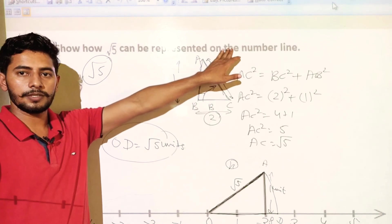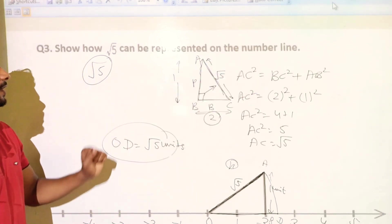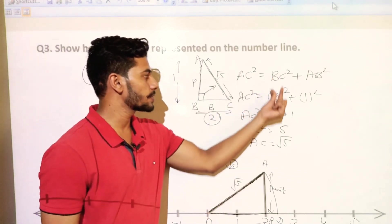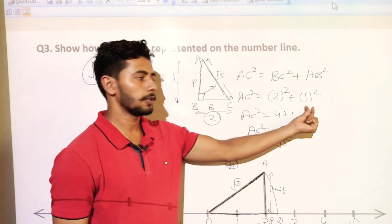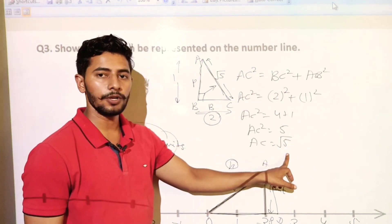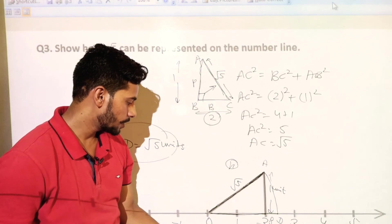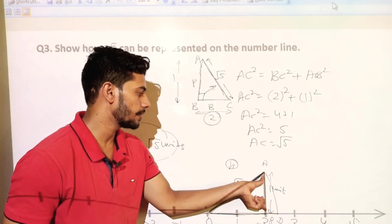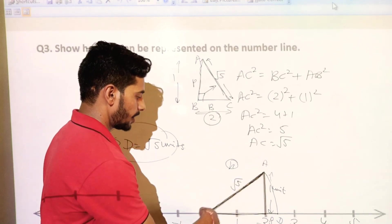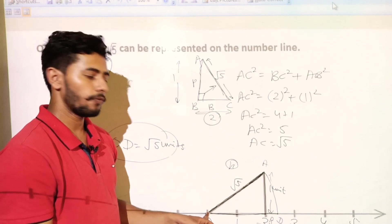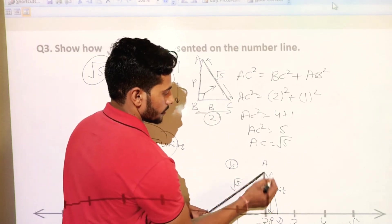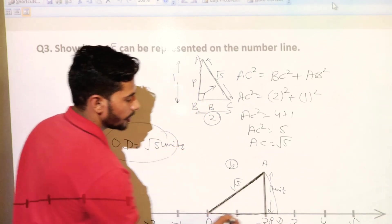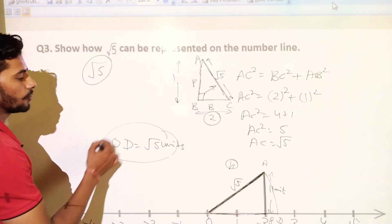So OD is root 5 units on the number line. To summarize: to represent root 5 on the number line, take base 2 and perpendicular 1 using the Pythagoras theorem to get hypotenuse root 5. Then use a compass to transfer this length to the number line, giving us point D at root 5 units from the origin.